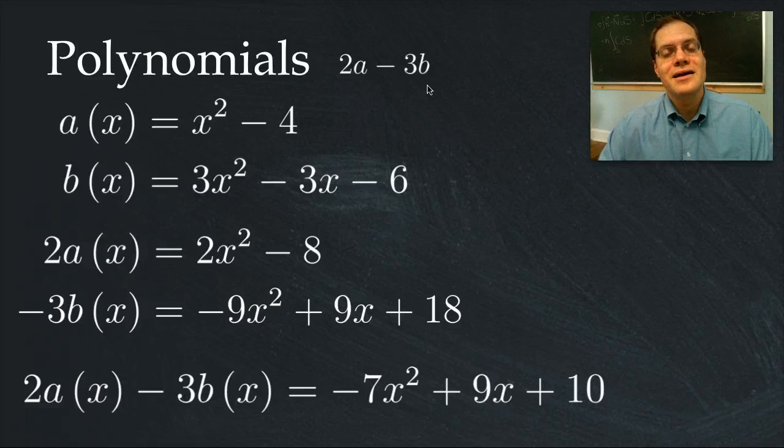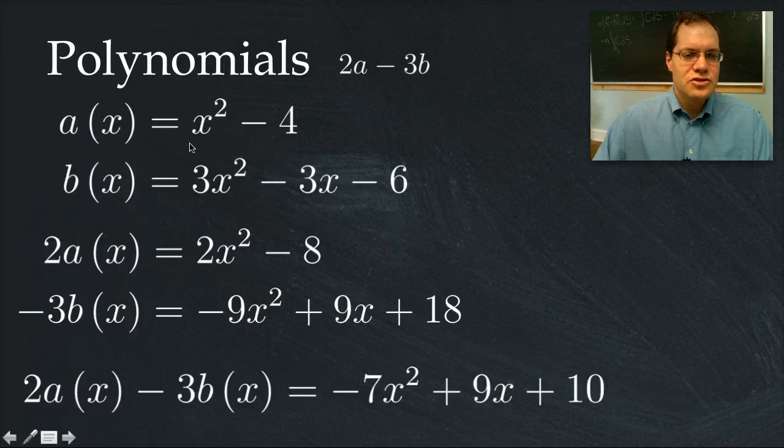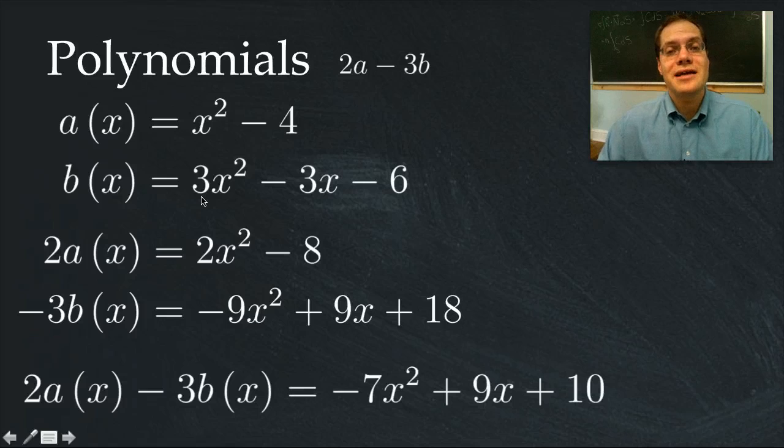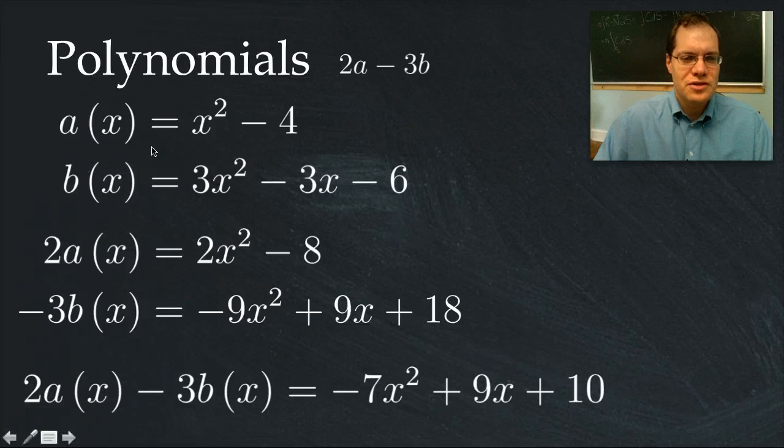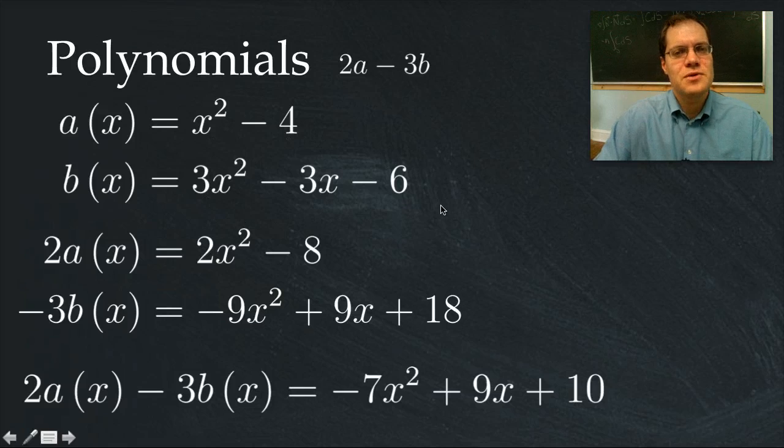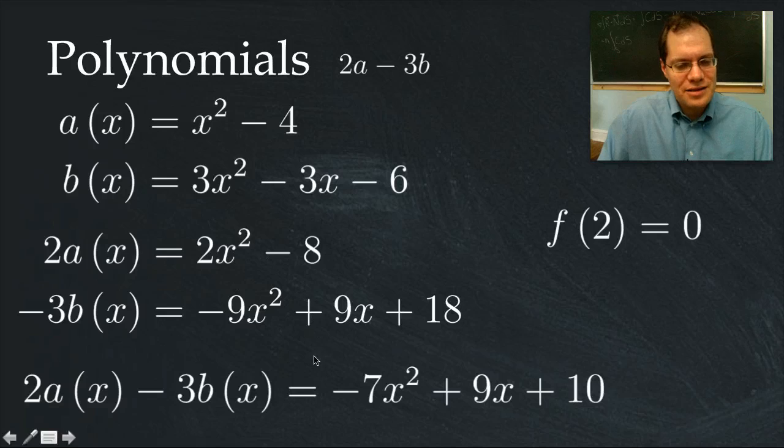Now it's time for my intriguing question. You will notice that the two original polynomials have the property that x equals 2 is a solution. In other words, when evaluated at x equals 2, the result is 0. It's true for this polynomial, and it's true for this polynomial as well. So both of these polynomials have this property.